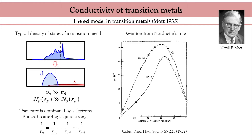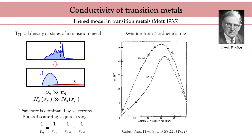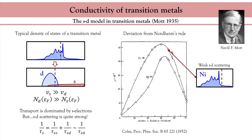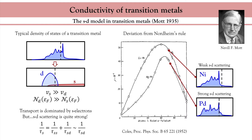A beautiful experiment by Coles illustrates the importance of S-D scattering. He measured the resistivity of two intermetallic alloys: nickel-copper and silver-palladium. The nickel-copper alloy nicely obeys Nordheim's rule. In contrast, the silver-palladium alloy shows a strong deviation around 40% of palladium content. In the case of nickel, the D-states are localized below the Fermi level, so adding more nickel into copper doesn't add much S-D scattering. In contrast, palladium has many D-states at the Fermi level, so adding more palladium to silver increases the amount of S-D scattering, taking off around 30% and culminating at 70% palladium.